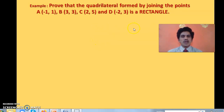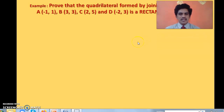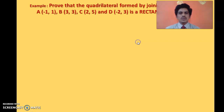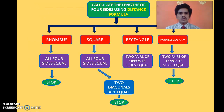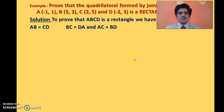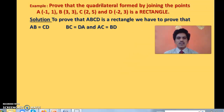Here is the problem: Prove that the quadrilateral formed by joining the points A(-1, 1), B(3, 3), C(2, 5), D(-2, 3) is a rectangle. To prove this, we must show that opposite sides are equal — AB = CD and BC = DA — and that the two diagonals AC and BD are also equal. Let us now prove this step by step.